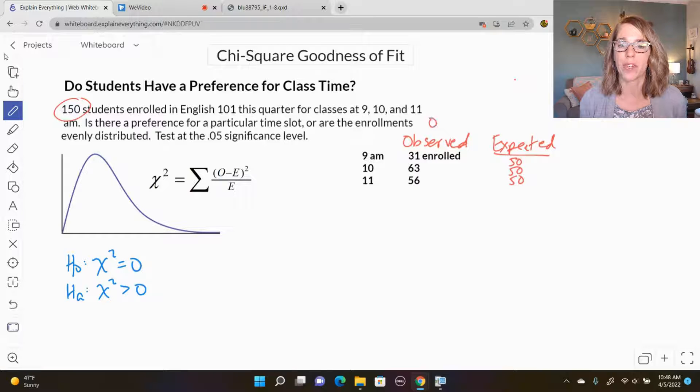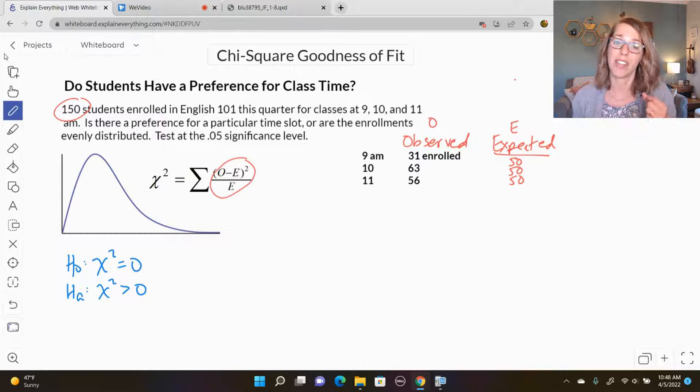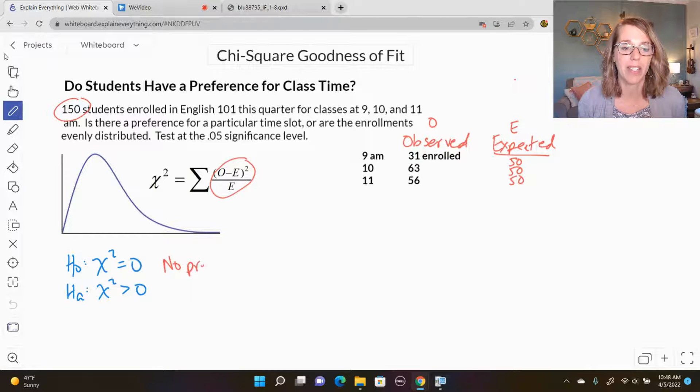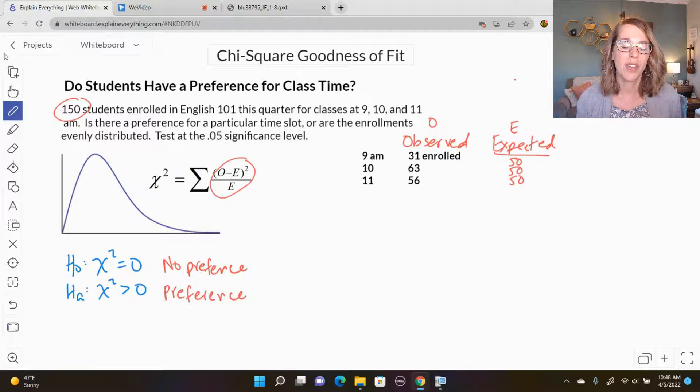I've got now my observed and my expected values. I'm going to put those into my chi-square measure, and that's going to allow me to test my two hypotheses. If we find after we do this measure that it's close to zero, that tells us that there is no preference. We expect a difference in enrollments, they're not going to work out evenly perfect every time. But if it's close to zero, we're going to say there's no preference. If it's significantly greater than zero, then we have shown that there is a significant preference. Notice that we don't do less than zero, and that's because of this squaring. We don't have a left tail because there are never any negative chi-square values.